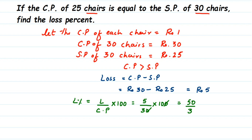So the answer is 50/3. If you want to convert it into a decimal you can, or you can keep it as a mixed fraction. Converting to mixed fraction: 3 times 16 is 48, and 48 plus 2 is 50, so we get 16 and 2/3. So the loss percentage is 50/3 or 16⅔%. Both decimal and mixed fraction answers are correct. I hope this question is clear — if you have any other questions or doubts, please drop a comment. Thank you so much for watching.